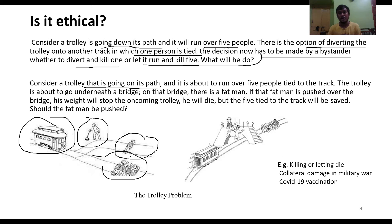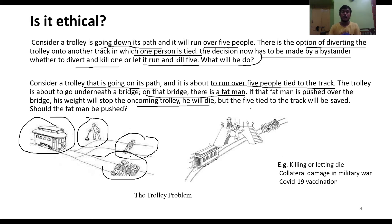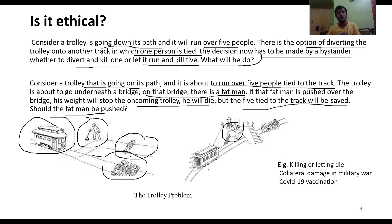In a variation of the trolley problem, the trolley is about to go under a bridge. On that bridge stands a fat man, and if he is pushed over, his weight will stop the oncoming trolley and he will die, but the five people tied to the track will be saved. The question is: should the fat man be pushed? If you push him, he dies, but the five people are saved.